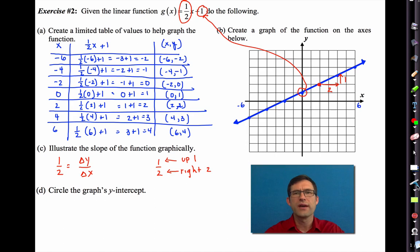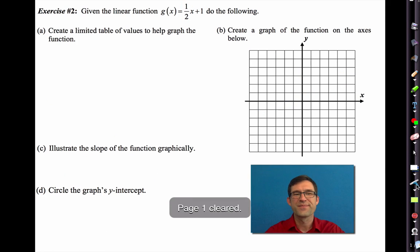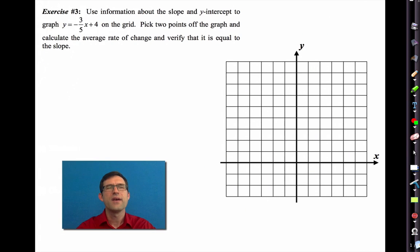Now, letter c says, illustrate the slope of the function graphically. Well, as we know, slope is one-half. And we know that's the change in y over the change in x. So if I grab a point right here, and I go this way. Always let x increase. And what I see is that I go to the right two and I go up one. And that's how we interpret a slope of one-half.